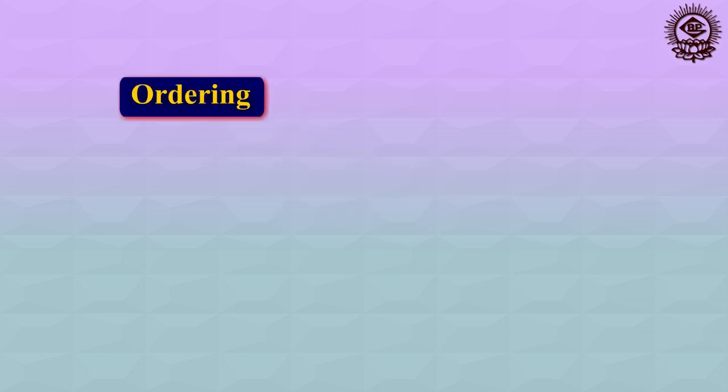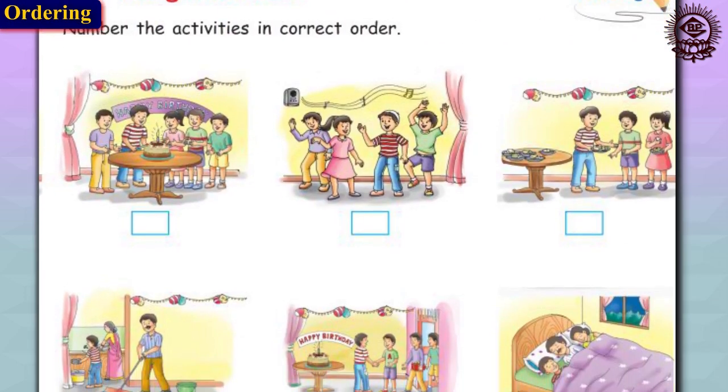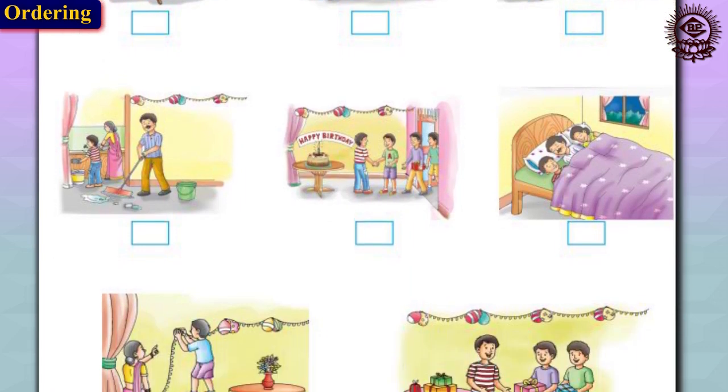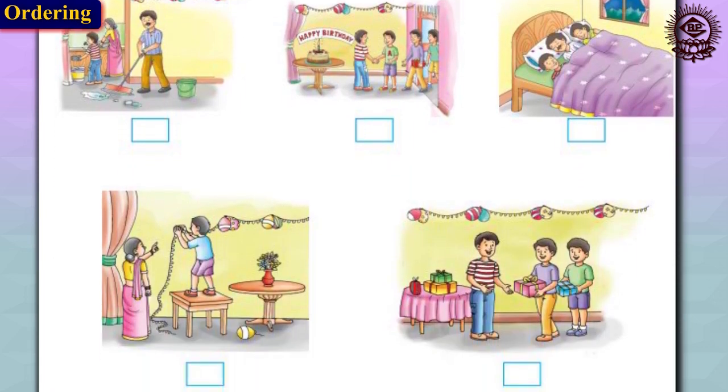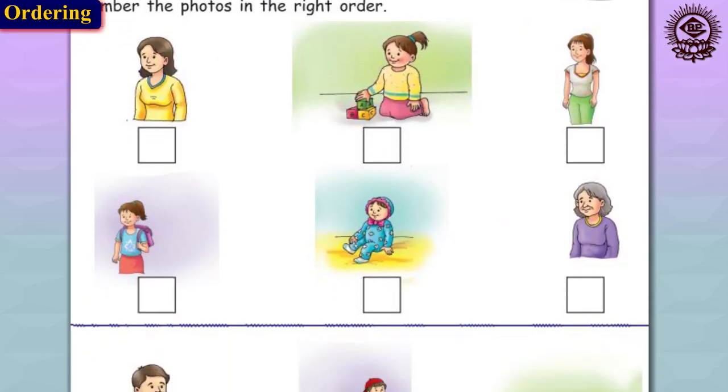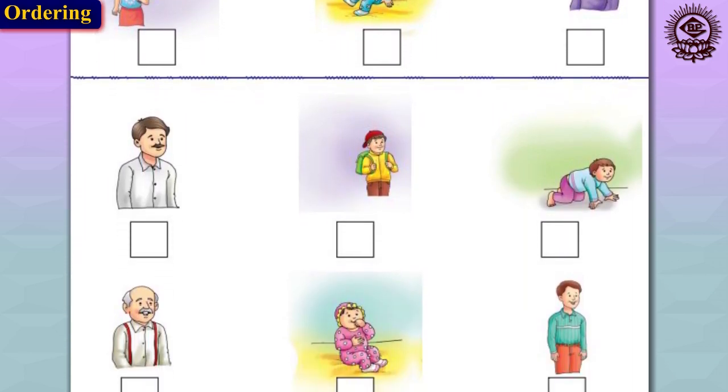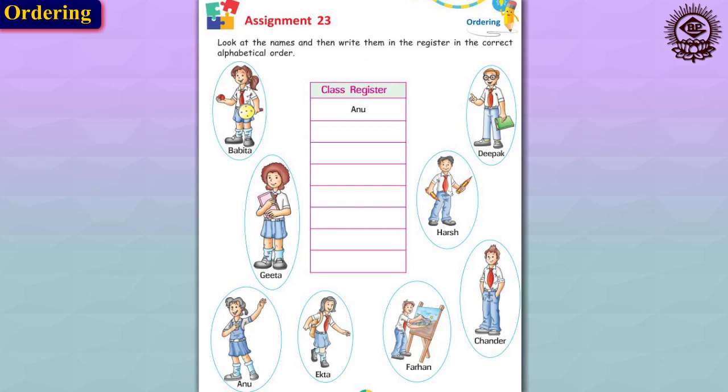Fourth is ordering. Children can only order when they are able to identify and describe attributes, notice differences and make comparisons. Ordering involves arranging objects according to increasing or decreasing amounts of an attribute. Children use est words, for example biggest, darkest.